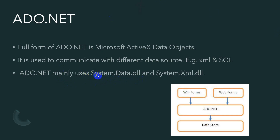ADO.NET mainly uses two DLLs. When we go to Visual Studio and do practical implementation, you will see two DLLs: the main one is System.Data.dll. If we are dealing with XML as a data source, we would use a different one. We'll discuss that later.